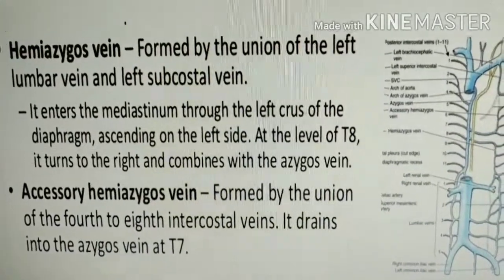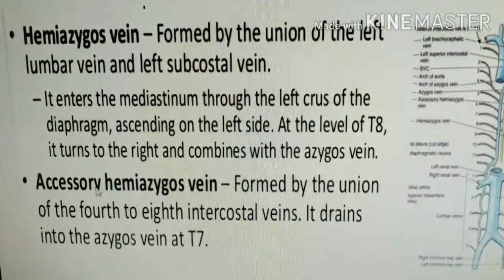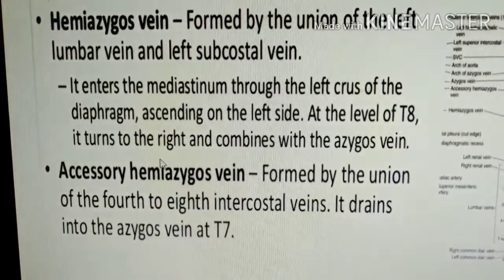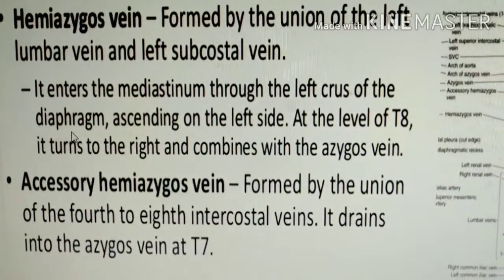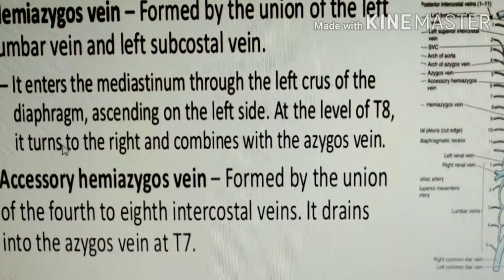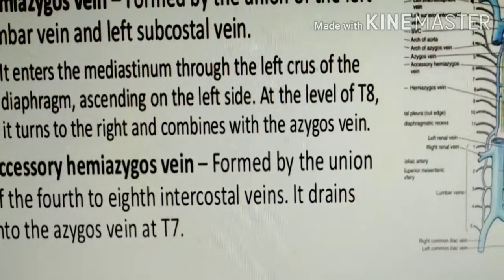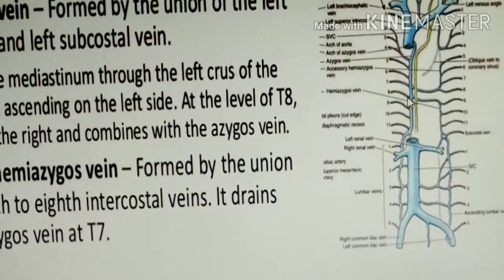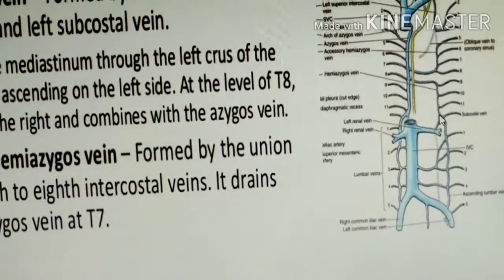The Hemiazygos Vein is formed by the union of the Left Lumbar Vein and Left Subcostal Vein. It enters the mediastinum through the left crus of the diaphragm, ascending on the left side. At the level of T8 or T7, it turns to the right and joins the Azygos Vein. So formation: Left Lumbar Vein and Left Subcostal Vein; it drains into the Azygos Vein.